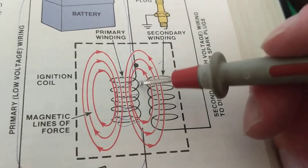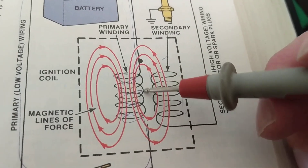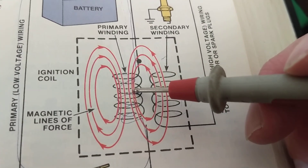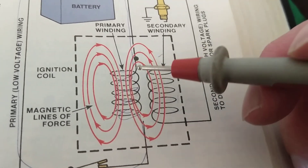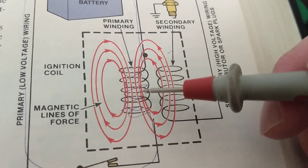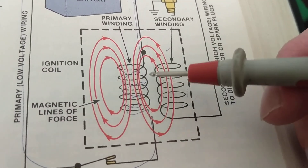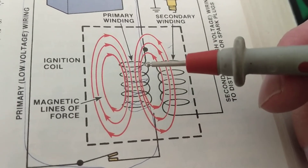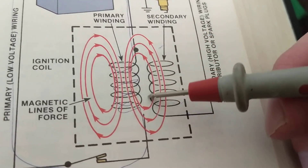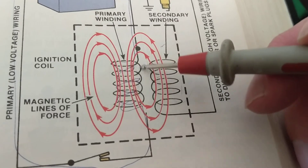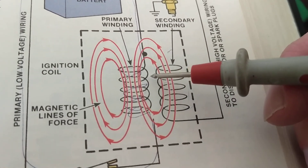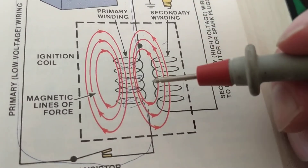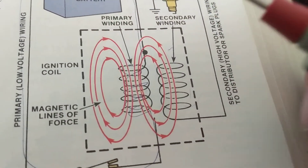While current flows, a magnetic field is being built up. The property of an inductor or coil is to oppose the building of that magnetic field. It tries to reach its maximum, and there is something called the back-EMF which tries to oppose it.